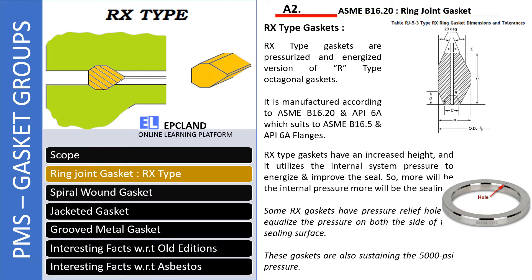Now let us talk about the second type of ring type joint gasket — that is Rx. Rx is just a pressurized and energized version of R, which we have just talked about — that is oval and octagonal type. This Rx is just a pressurized and energized version of the same gasket. It is again manufactured as per 16.20 and API 6A, which will suit 16.5 and 6A flanges. We'll talk about why this energized version is required in the next slide.